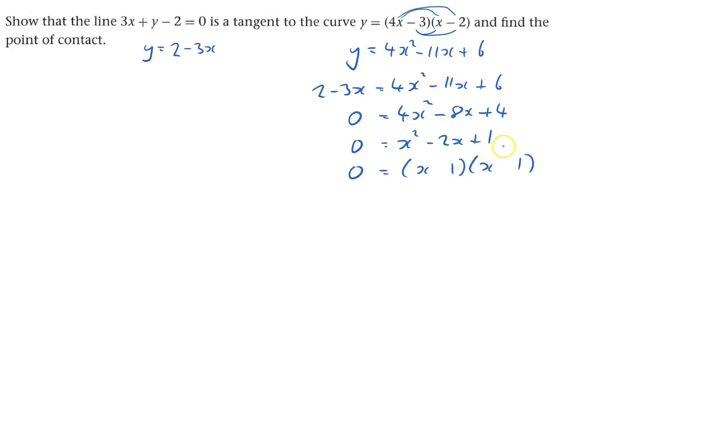It's positive, so it's either both positive or negative. That's negative, they're both going to be negative. Just check, x squared minus x minus another x is minus 2x plus 1. Good. So that means that x equals 1, or x equals 1.